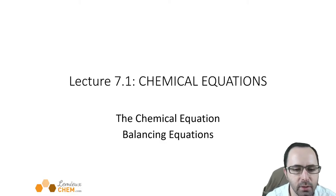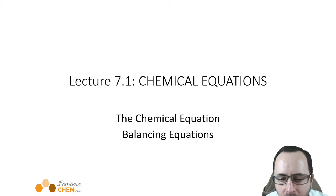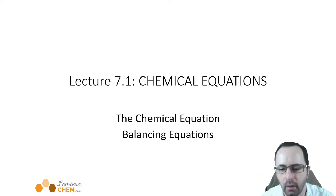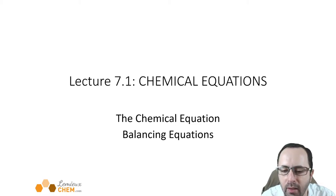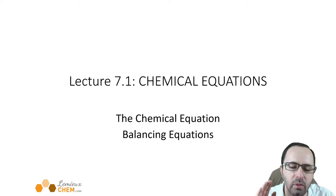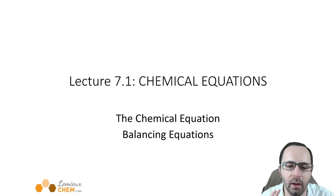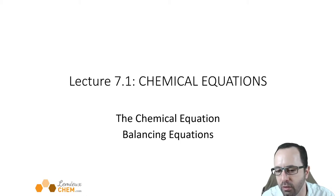Welcome back, Chem 101 students, to week 7. This week we're going to be talking about chemical reactions and chemical equations. We'll start by talking about how to write down chemical equations and how to do what's called balancing those equations, which is making sure that the atoms that are produced are the same as the atoms that we started with, just rearranged and bonded together in a different way.